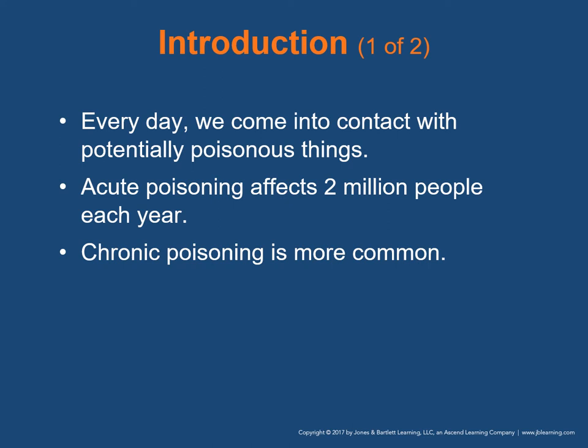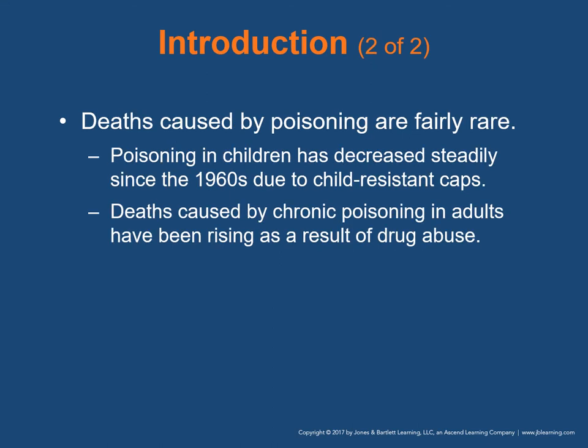We come into contact with things that are potentially poisonous every day. Acute poisonings affect 2 million people each year, and chronic poisoning is more common. Deaths caused by poisoning are fairly rare. Poisoning in children has decreased steadily since the 1960s due to child-resistant caps, but deaths caused by chronic poisoning in adults have been rising as a result of drug abuse.